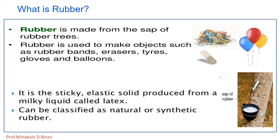Natural rubber is also called latex rubber and is made from the white sap of some trees. Other elastomers, called synthetic rubbers, are made by chemical processes. Rubber is a polymer — a material which can be stretched and shrink.